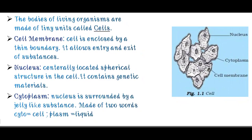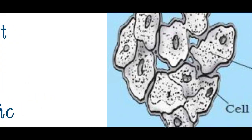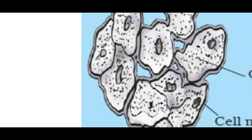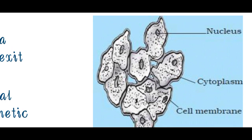Next is nucleus. The nucleus is a centrally located spherical structure in the cell. Its function is that it controls the cell - it controls the entire cell. The nucleus contains genetic material. Genetic material is RNA (ribonucleic acid) and DNA (deoxyribonucleic acid). You can see in this cell diagram the spherical part - that is called nucleus. Every cell has one nucleus.